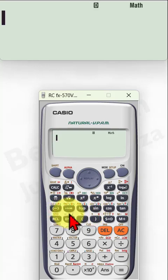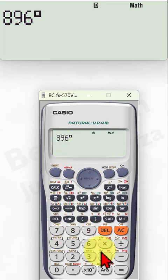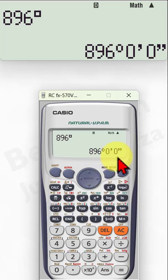And if you want to write in terms of degree, minutes, and seconds, imagine you have this value. You can just click on this and then it automatically converts to degree, minutes, and seconds.